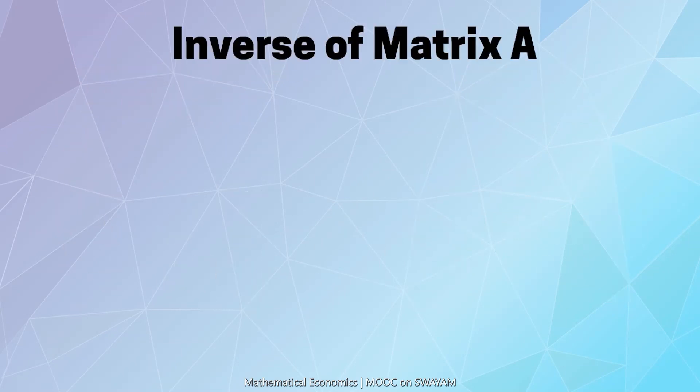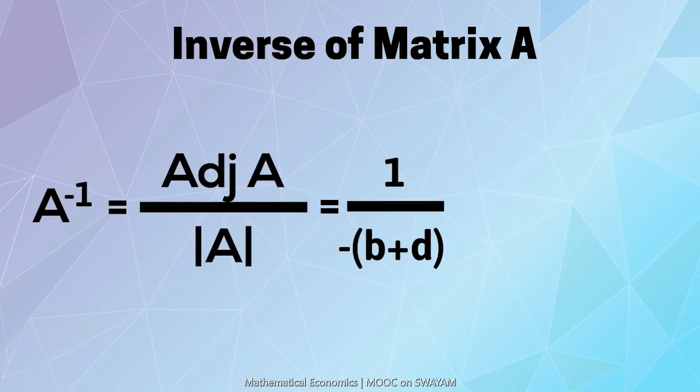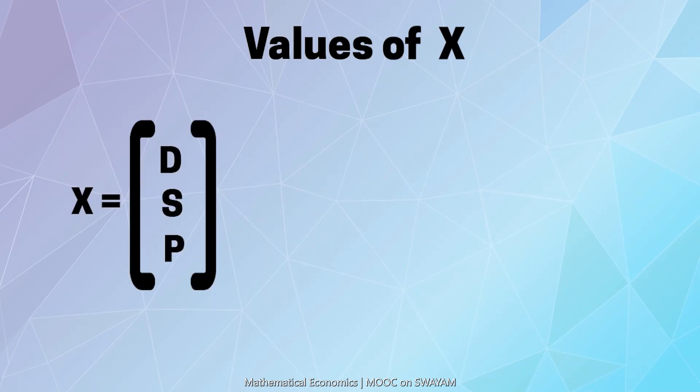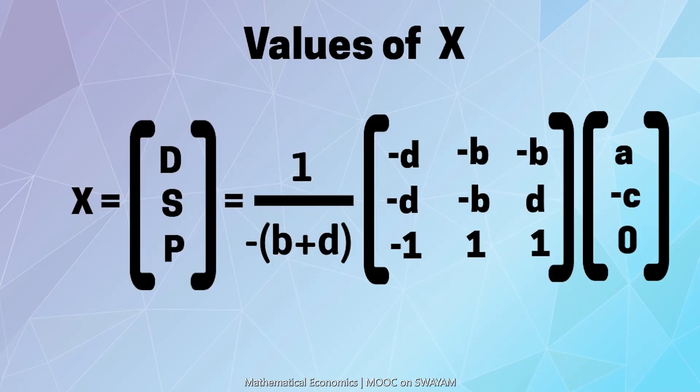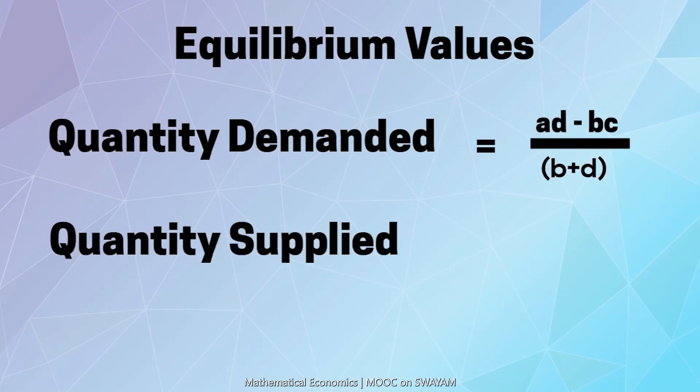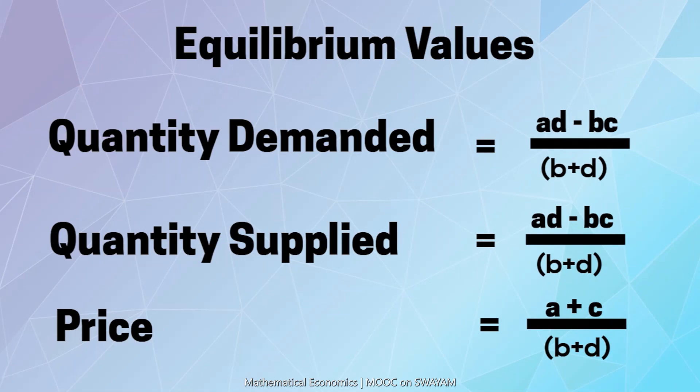Finally, inverse of the matrix A is given by dividing the adjoint of the matrix by the determinant of the matrix. Further, the values of matrix X may be calculated by multiplying the inverse of matrix A with the vector of constants. We finally determine the equilibrium values of quantity demanded, quantity supplied, and the equilibrium price.